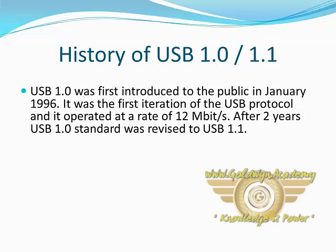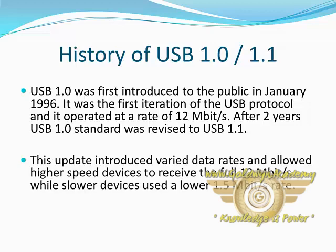After two years, the USB 1.0 standard was revised to USB 1.1. This update introduced varied data rates and allowed high-speed devices to receive the full 12 megabits per second, while slower devices used a lower rate of 1.5 megabits per second.